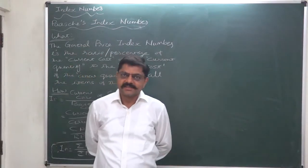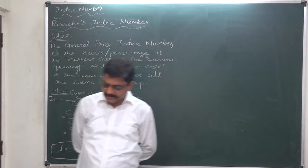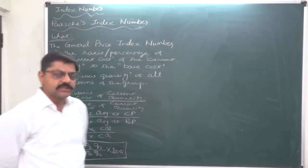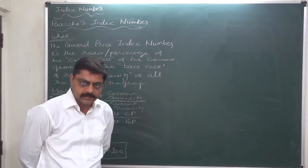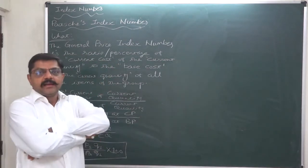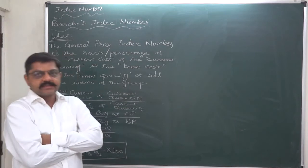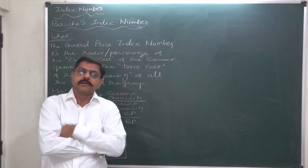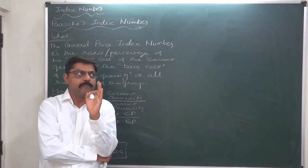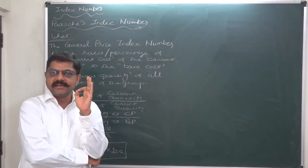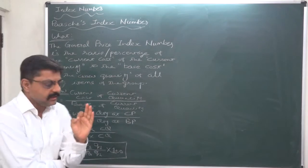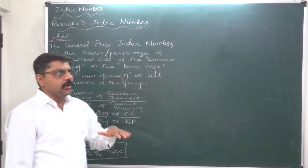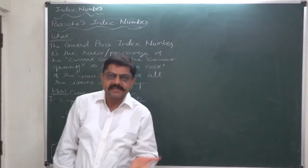Hello and welcome friends. As you know we are studying index numbers and now this is the turn of Paasche's Index Number. As we have already studied Laspeyre's Index Number, we know that in Laspeyre's Index Number the quantity of the base year was the center of calculation. In Paasche's, the quantity of the current year is taken.